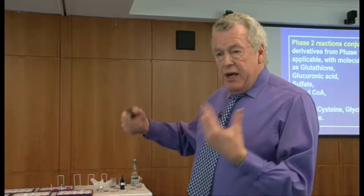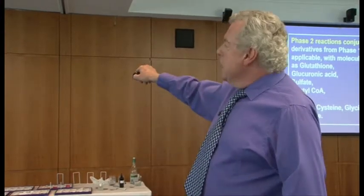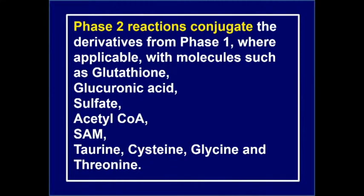There are a number of compounds that do this. The tripeptide glutathione does this. Glucuronic acid does this. Sulfate, or sulfur, does this. Acetyl-CoA does this — acetylation. SAM, which is the universal methylator, so this is methylation. And then a number of amino acids like taurine, cysteine, and glycine can also act as detoxifiers.